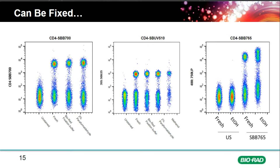Star Bright dyes can be fixed. Testing with 2% paraformaldehyde, paraformaldehyde combined with methanol, and ethanol fixation all showed no reduction in stain index. Ethanol-fixed samples compared to fresh samples still give excellent separation with no reduction in performance when fixing with ethanol.